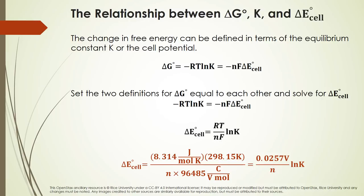This is extremely useful — it relates the cell potential directly to the equilibrium constant. Plugging in R, temperature in Kelvin, and Faraday's constant at 25°C, everything simplifies to a handy equation: E°_cell equals 0.0257 volts divided by N, multiplied by the natural log of K. The only variable remaining is N, which depends on the specific reaction.